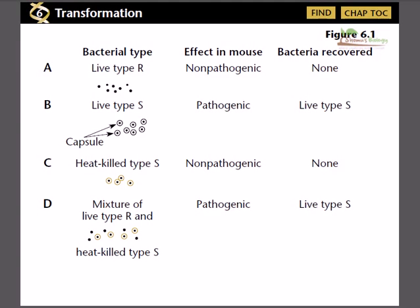Welcome friends. In this video tutorial I am going to talk about the experiment which was done to show that the transformation or exchange of genetic material exists between bacterial cells. This is a very clever experiment which was performed by Frederick Griffith, who was the father of modern bacterial genetics. He set up a very clever experiment to show that there is a way of transferring genetic elements between bacterial cells.